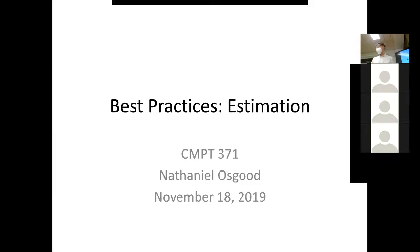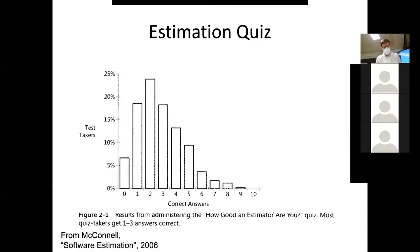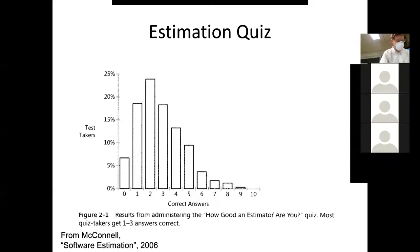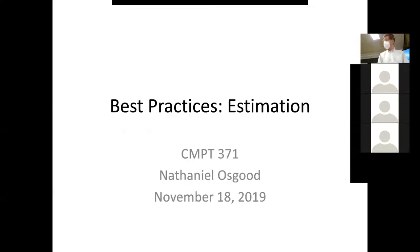This quiz actually comes from a book on software estimation by Steve McConnell — the book is called 'Software Estimation.' It turns out this quiz has been delivered through years of 371 students, but also years of people from a software background, and they have a fairly good sense of what fraction of the answers people actually get right.